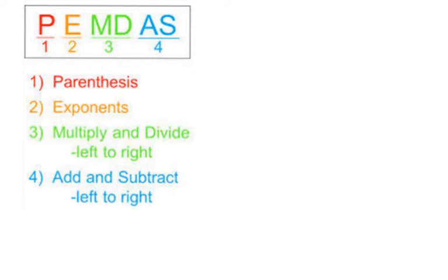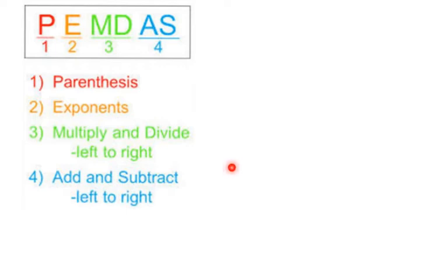If there's division before multiplication, do the division first; if multiplication is first, do multiplication first. The same applies to addition and subtraction — it's done left to right. The two most common mistakes are thinking M comes before D so you do all multiplication first, or A comes before S so you do all addition first. That's not the case — multiplication and division go left to right, and addition and subtraction go left to right.